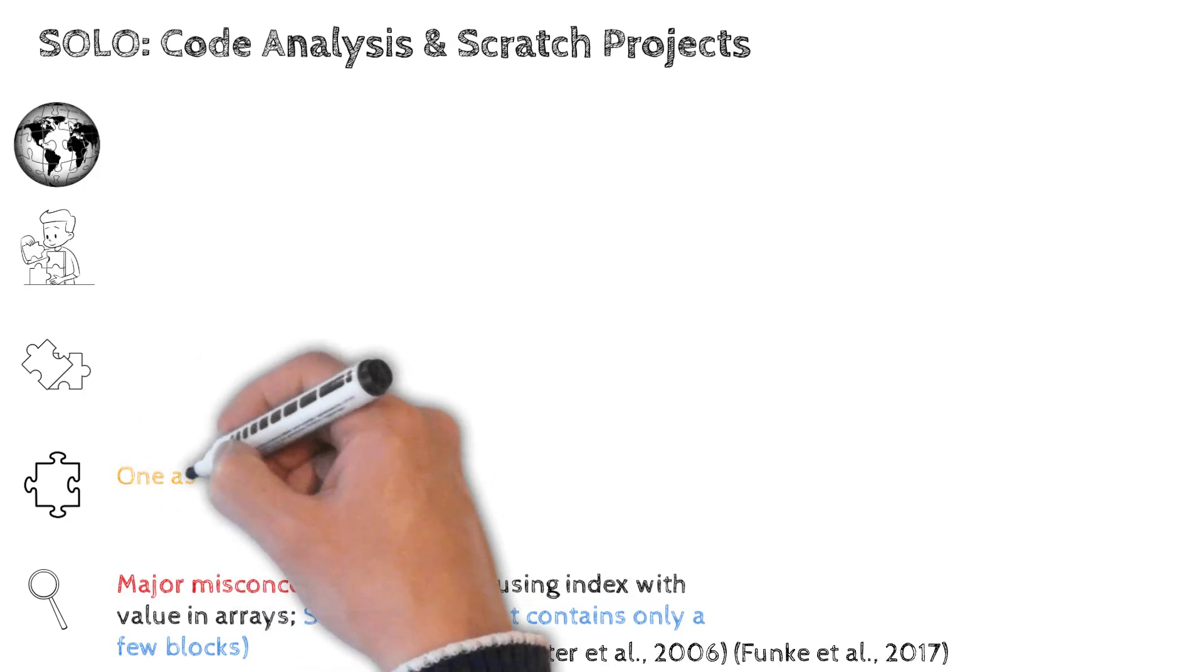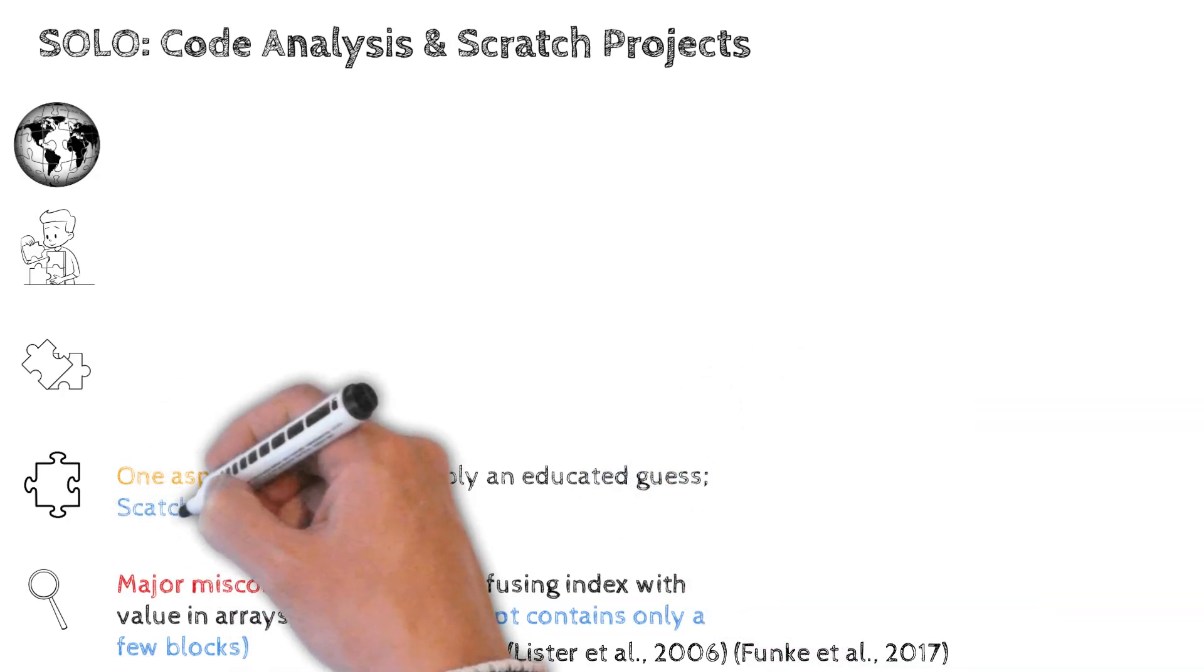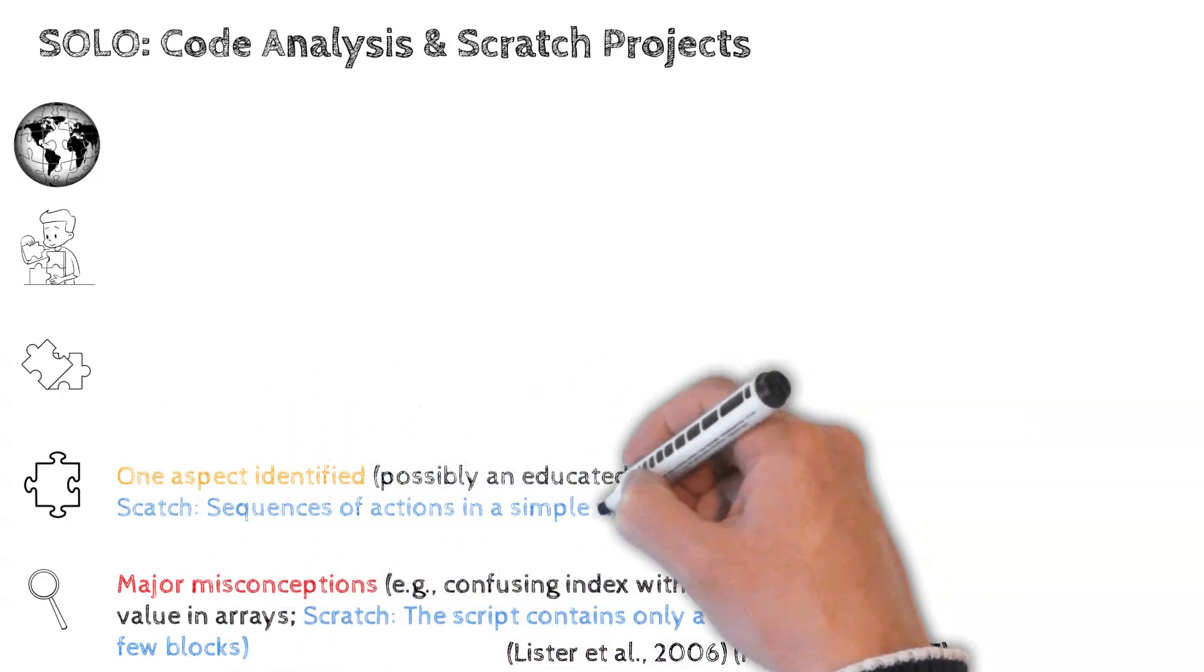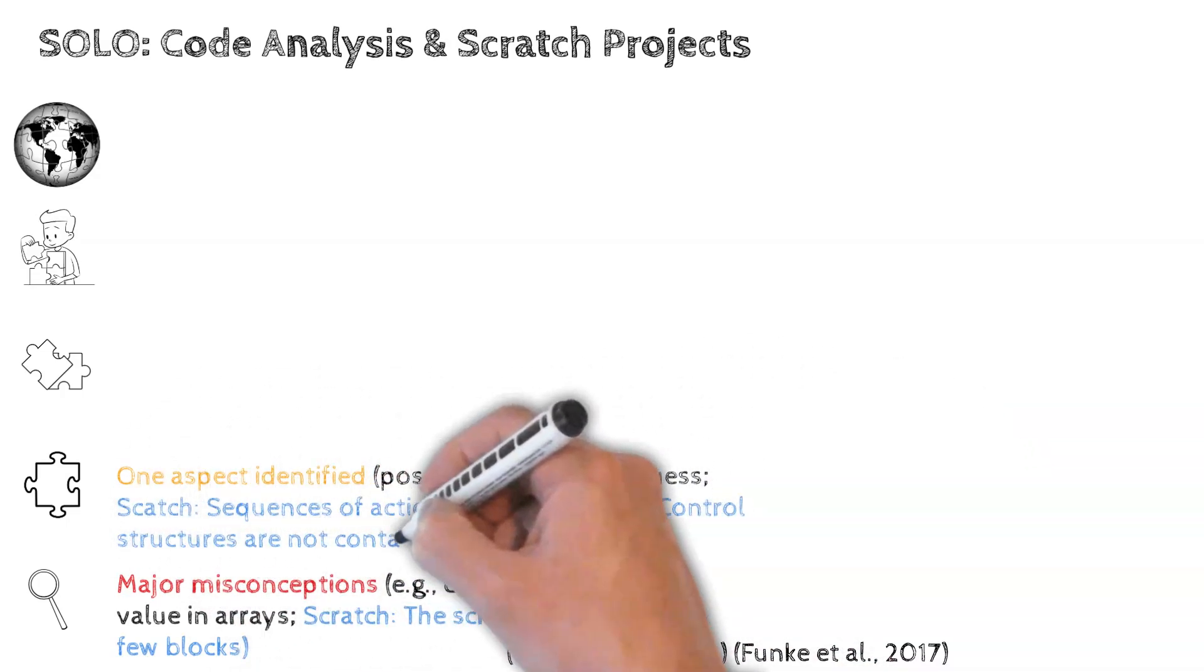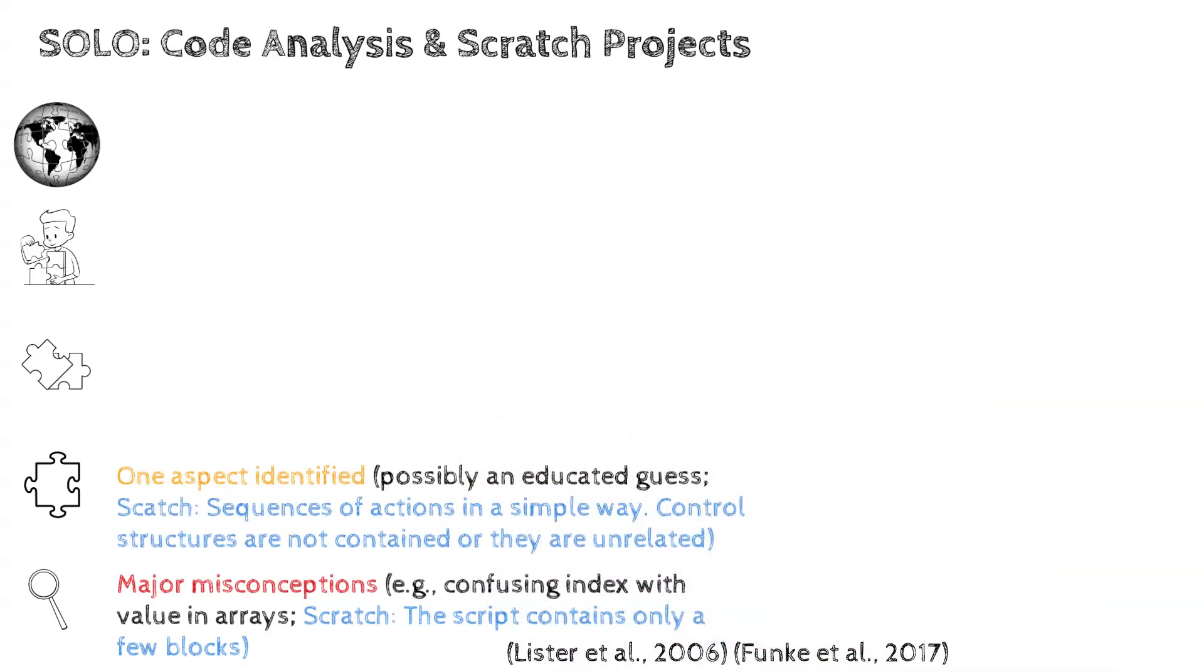Unistructural: one simple aspect is identified, possibly an educated guess. Regarding Scratch, the script contains sequences of actions in a simple way, but control structures are not contained or they are unrelated.